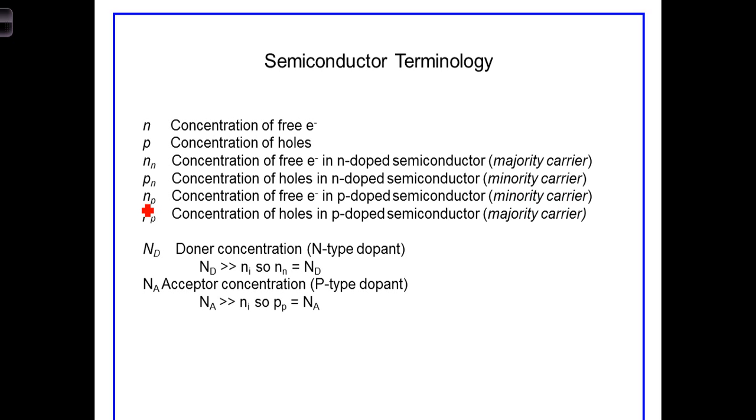N sub p is the concentration of electrons in P-doped semiconductor. So in a P-doped semiconductor, you've got more holes than electrons, but again, due to thermal activity, holes will be formed and free electrons will exist, even though the majority carriers in that semiconductor will be holes. And so electrons that exist in the P-type semiconductor will be the minority carrier.